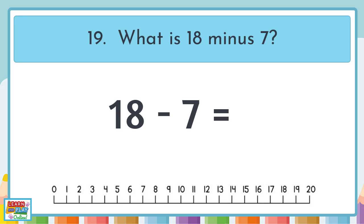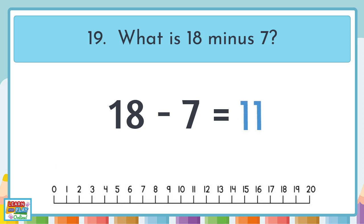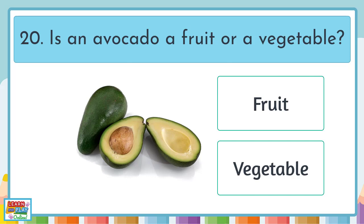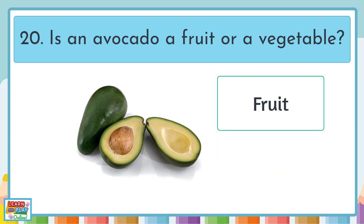Question 19. What is 18 minus 7? 11. And here is our last question for our quiz today. Is an avocado a fruit or a vegetable? It's a fruit.